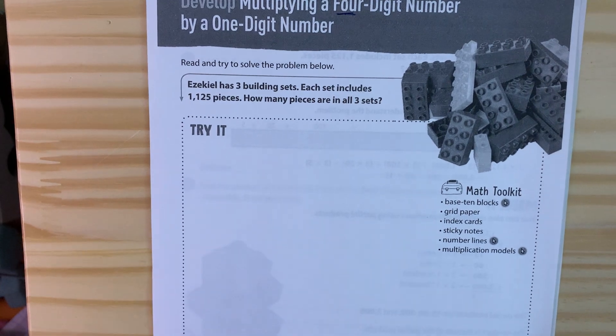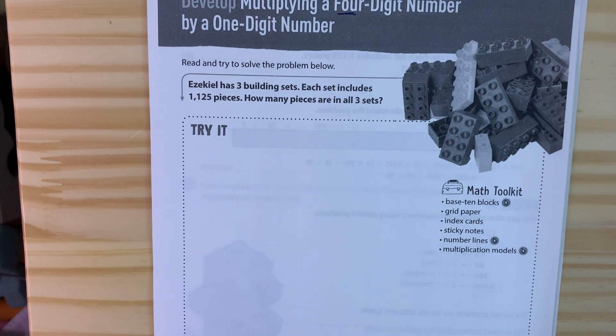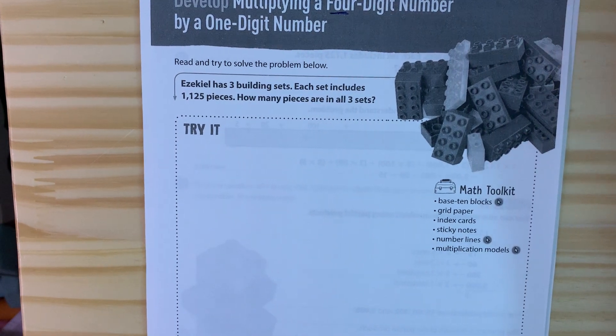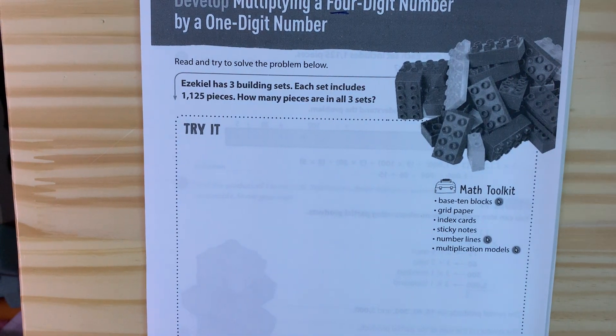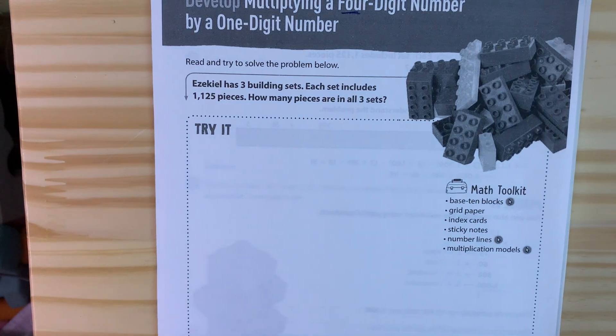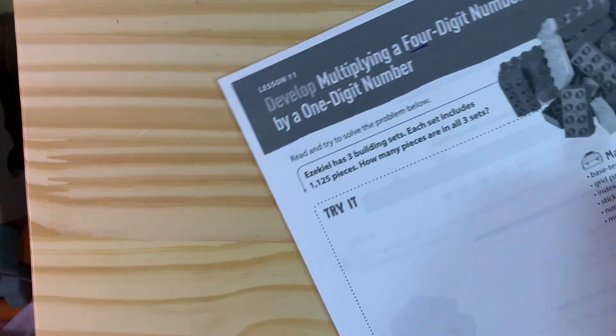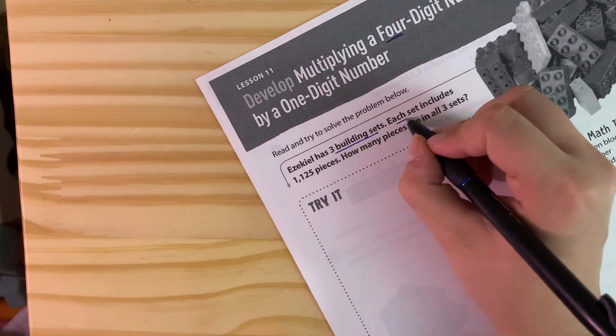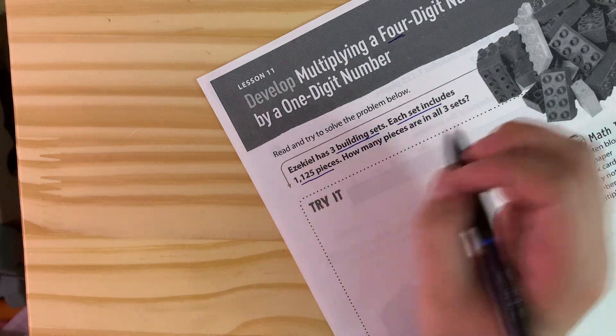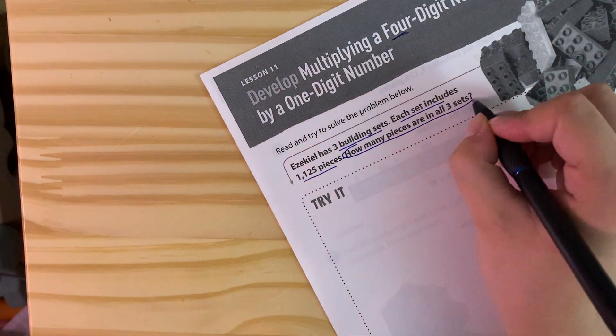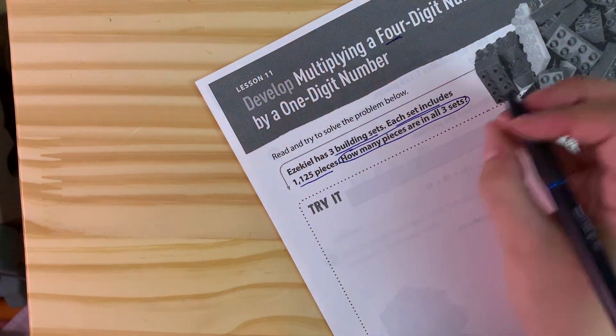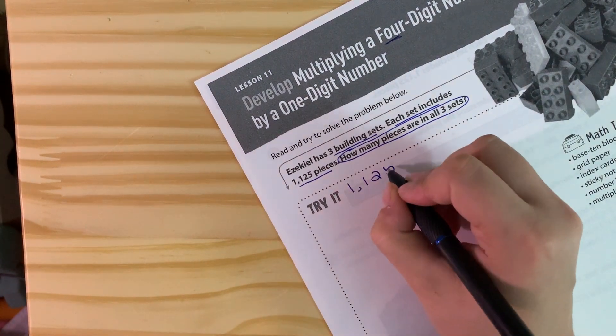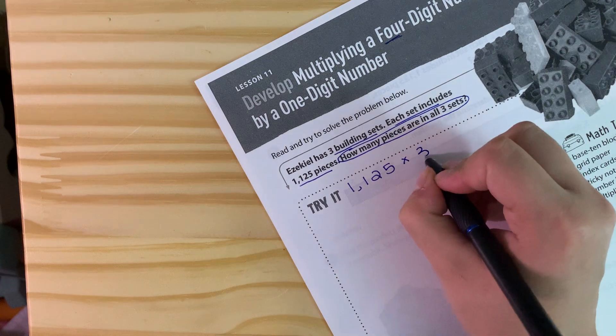Today we're going to be doing pages 241, 242, and 244, and then you'll be doing an independent practice on Google Classroom once you finish. So let's jump in and get started. It says Ezekiel has three building sets and each set includes 1,125 pieces. How many pieces are in all three sets? We can see right off the bat our problem is going to be 1,125 times 3.